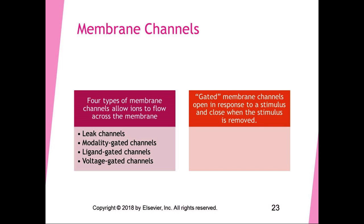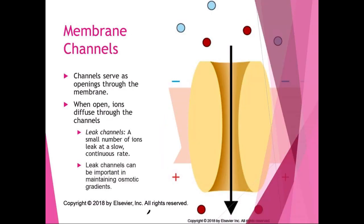Channels serve as openings through the membrane; when open, ions can diffuse through in the direction of their concentration gradient. A small number of ions leak through leak channels at a slow, continuous rate — like a drip irrigation system. Leak channels can be important in maintaining osmotic gradients. Chloride leak channels are open all the time, allowing chloride — a negative ion — to float across the membrane, adding negative charge to the cell.